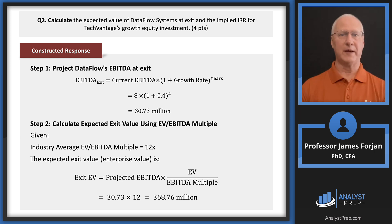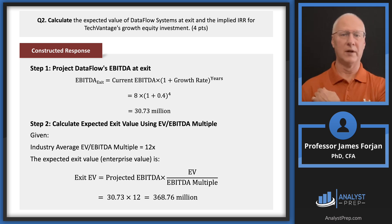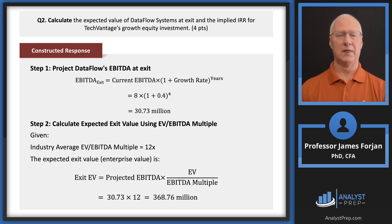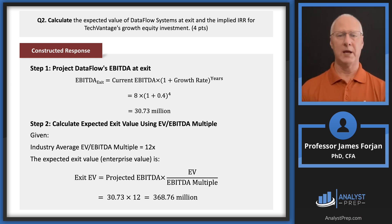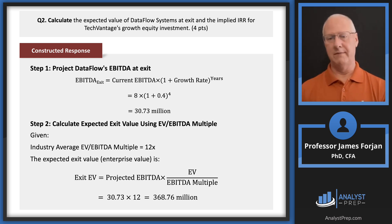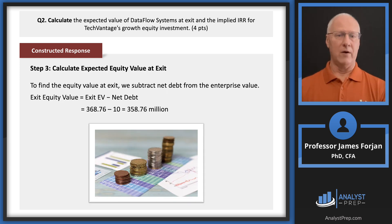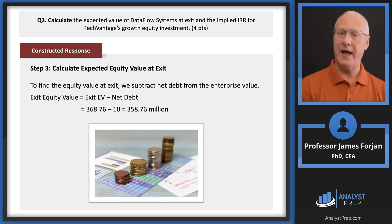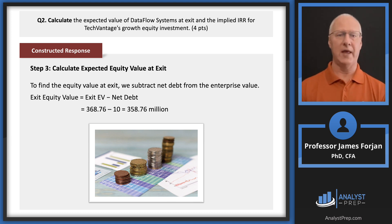Question 2: calculate the expected value of Data Flow Systems at exit and the implied IRR. Using time value of money with the given growth rate, starting from current profitability of $8 million and compounding over four years gets us to approximately $30.73 million. Multiply that by the 12x multiple to get roughly $370 million. Remember to subtract the net debt of $10 million, bringing us down to about $360 million.